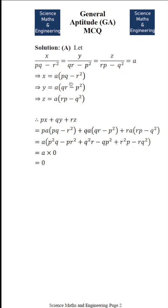So this implies x is equal to a into pq minus r square, y is equal to a into qr minus p square, and z is equal to a into rp minus q square. Therefore,